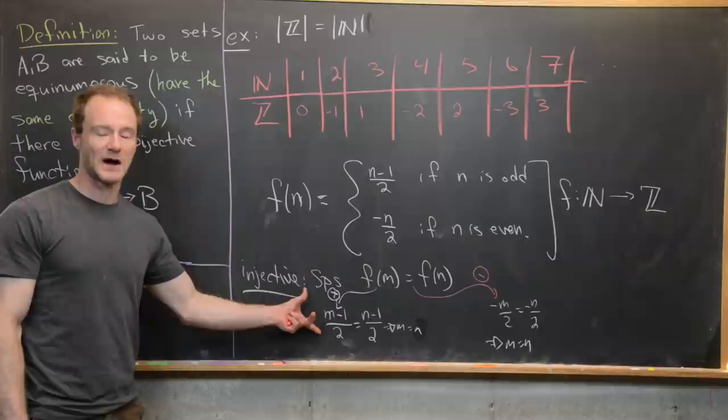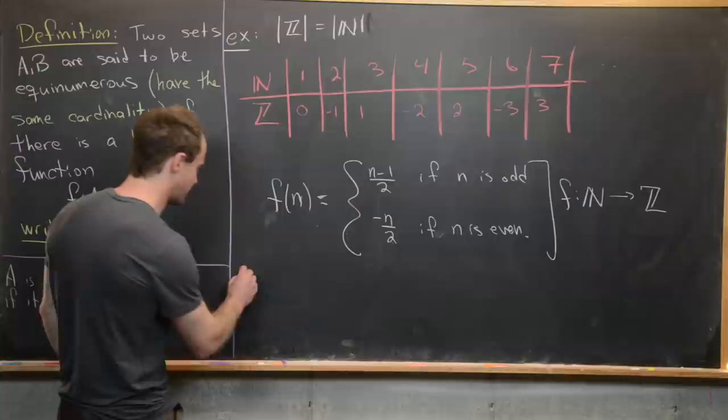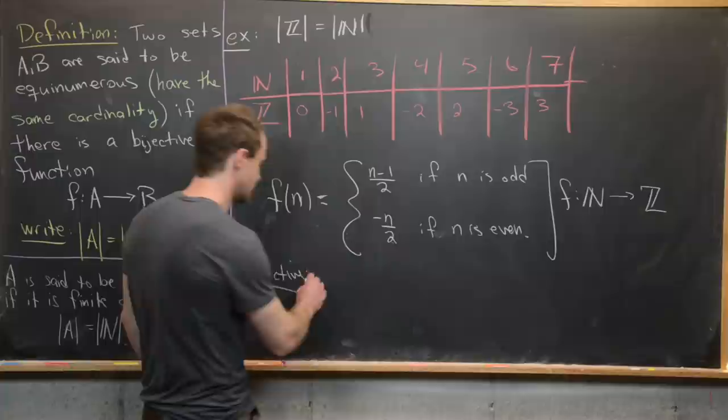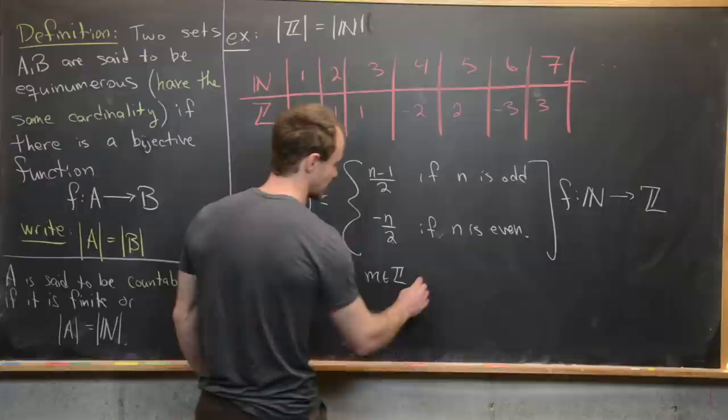Now let's prove that f is surjective. That means we want to take an integer and find a pre-image for it. So we'll let m be an integer, and notice this splits into two cases.